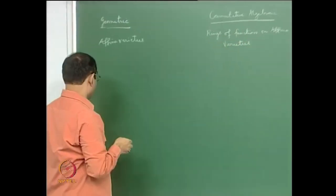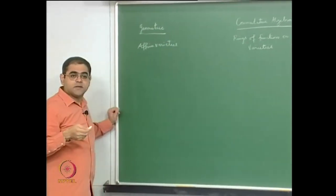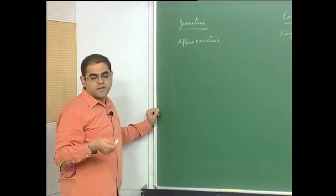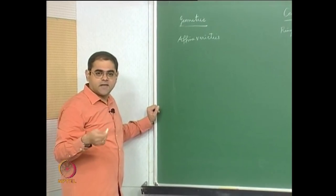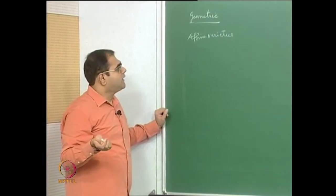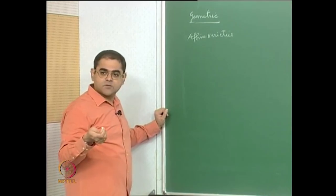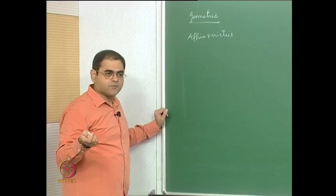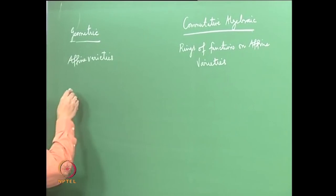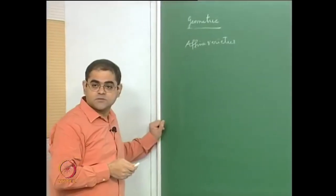Let me recall: an affine variety is supposed to be a closed irreducible subset of some affine space. Affine space of dimension n is just k^n — k cross k cross k, n times — given the Zariski topology. The Zariski topology declares closed sets to be the common zero loci of a bunch of polynomials in the appropriate number of variables. So on the geometric side we have closed irreducible subsets of affine space.